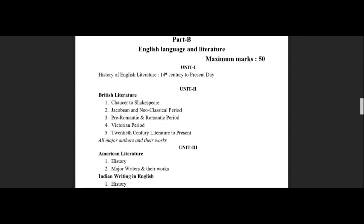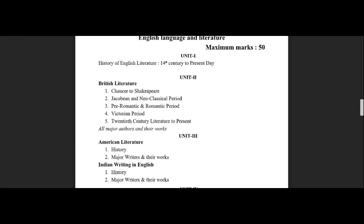In Unit 2, there is a lot of British literature. Major writers such as Chambers, the Jacobean and Neoclassical periods, and many other periods like the Romantic period, Pre-Romantic, Victorian, and 20th century literature to the present day. For present day, they can ask you about Arvind Adiga or Arundhati Roy, who are present day writers. This covers British literary history and Indian writings.